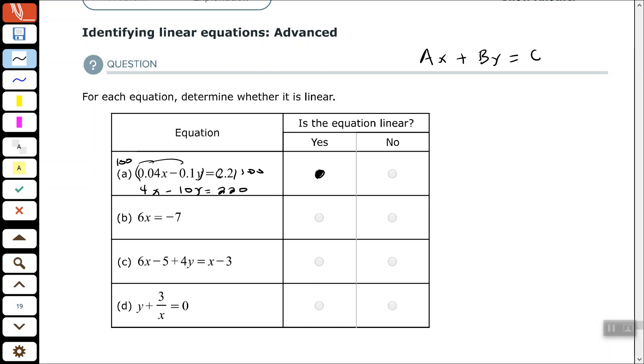Part B, we have 6x minus 7. Again, the standard form will be Ax plus By equals C. In this case, B and Y are not there, which is fine. I mean, it meant that B was 0, so 6x equals negative 7.